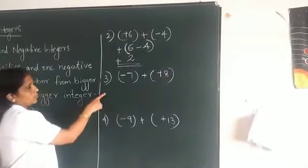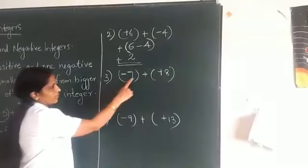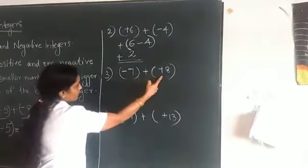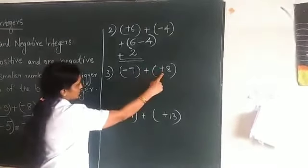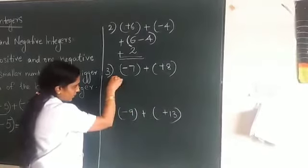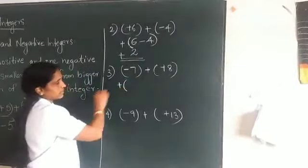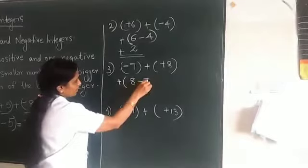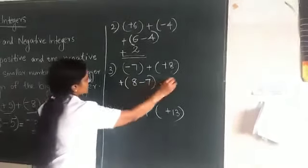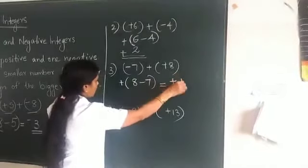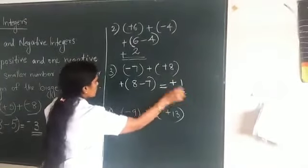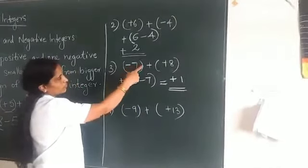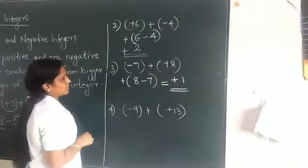Next problem: negative 7 plus positive 8. Here, the bigger number's symbol — which one? Plus. So we write plus, and within brackets, subtract smaller from bigger: 8 minus 7 equals 1. So the answer is positive 1. Without writing each step, you must be capable of doing the problem after practice.